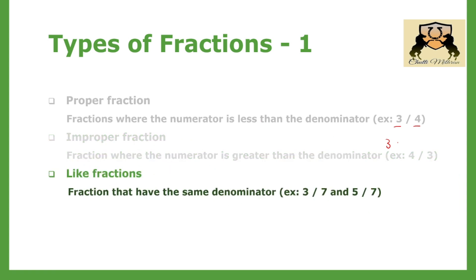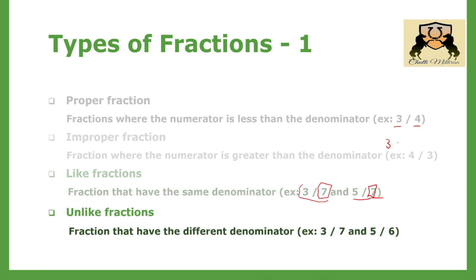Like fractions: fractions that have the same denominator are called like fractions. For example, 3 by 7 and 5 by 7 — if you observe closely, both of them have the same denominator, 7. So these are like fractions.